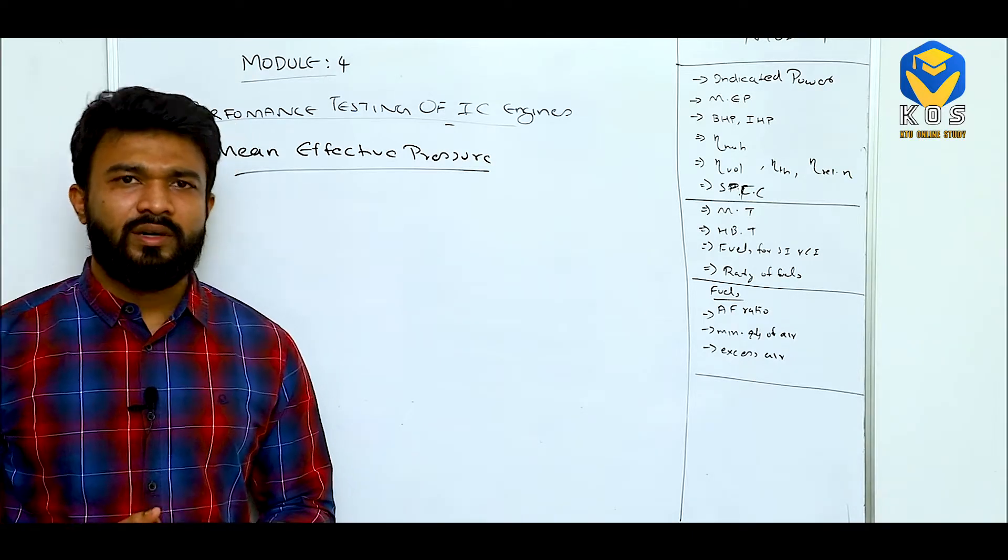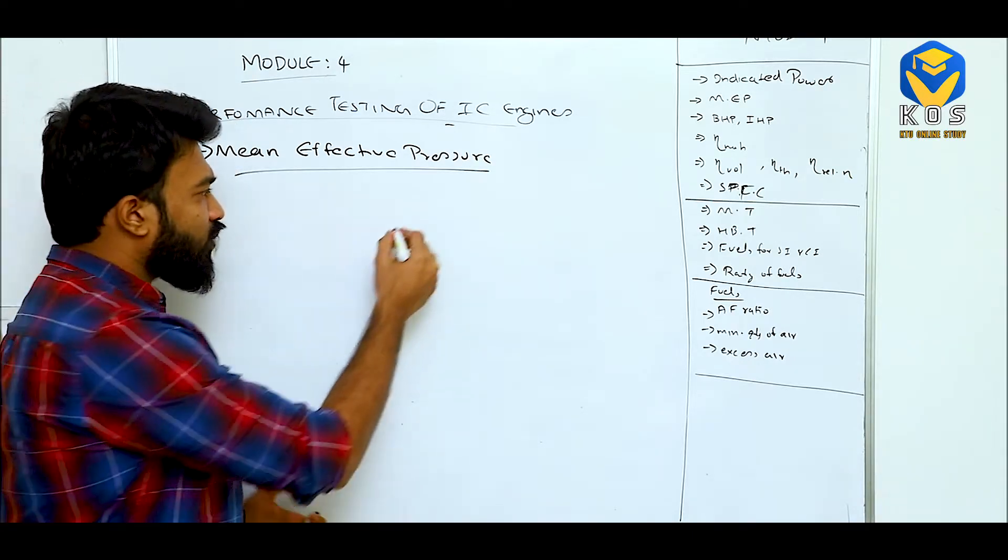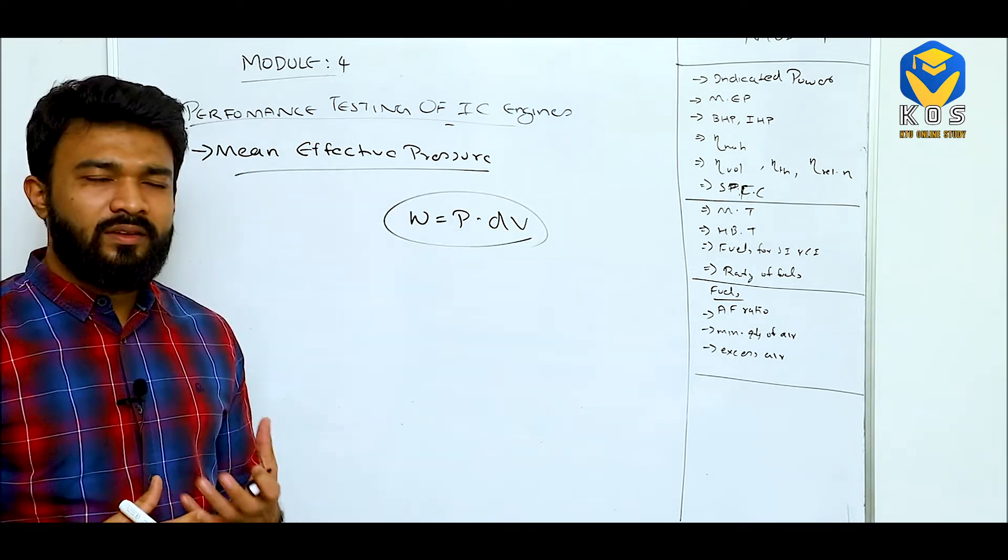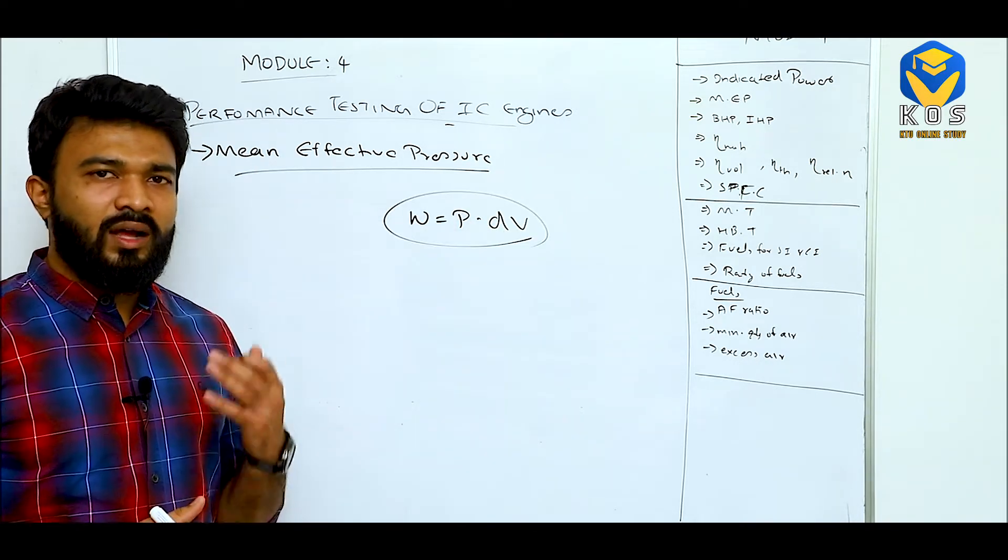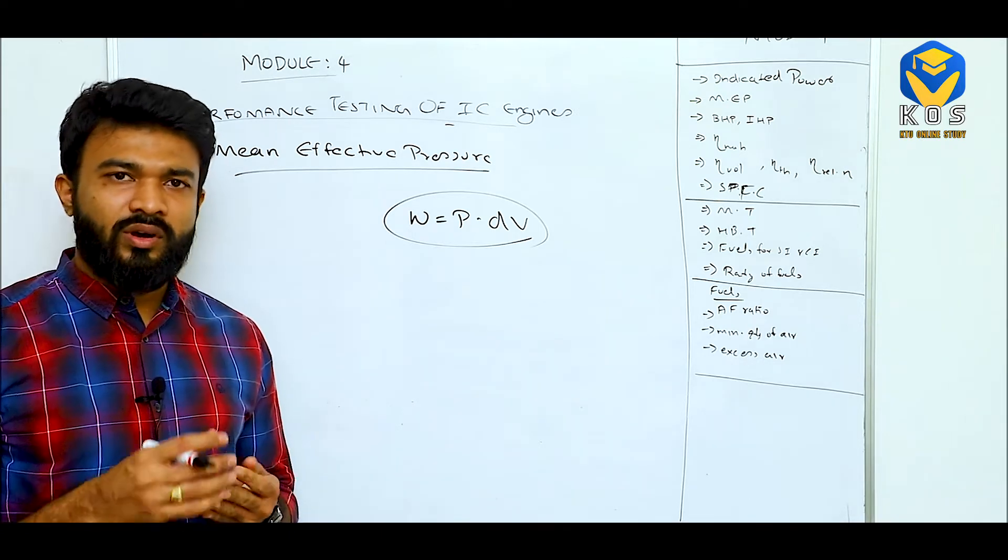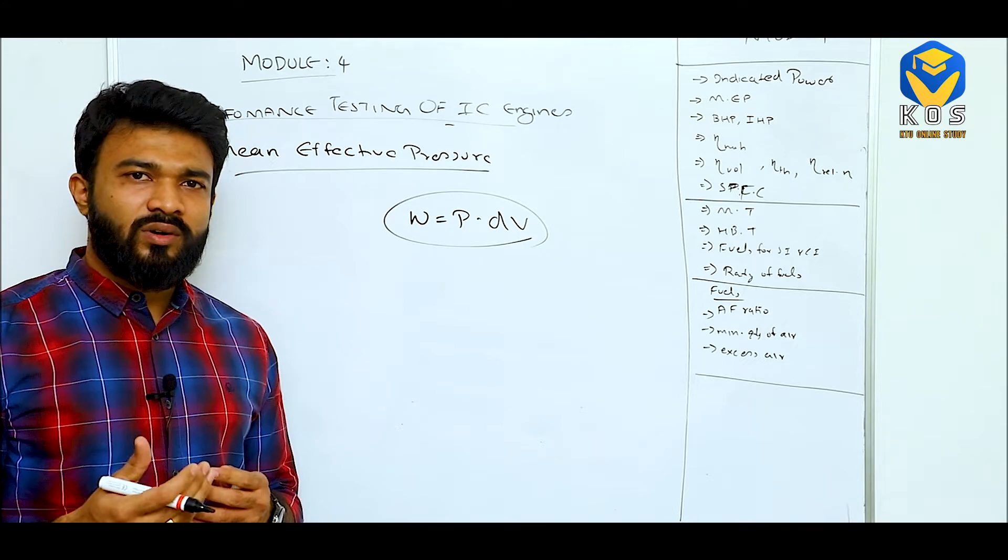Next, we will see what is mean effective pressure. Mean effective pressure means we know work done is given by the formula P into dV. And if we observe a four stroke engine, that means 4 strokes: compression stroke, power stroke, and exhaust stroke. In these 4 strokes...